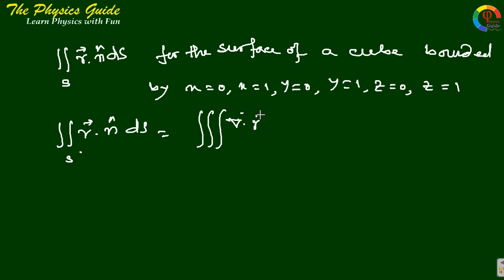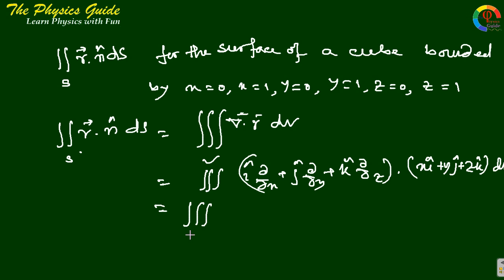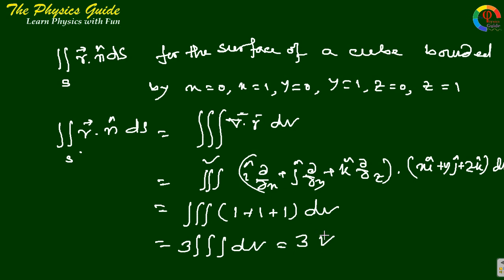Computing del dot r: since r = x·i + y·j + z·k, we apply del = (∂/∂x)i + (∂/∂y)j + (∂/∂z)k, giving del dot r = 1 + 1 + 1 = 3. Therefore the volume integral becomes the integral of 3 dv, which equals 3V.